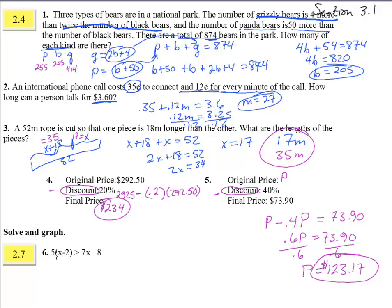Number six, solve and graph. We've got to graph this guy as well. So here we have, we jump this 5 in and we get 5x minus 10 is greater than 7x plus 8. We've got to get the x's together. So let's subtract 5x. And then subtract 8 to both sides and we get negative 18 greater than 2x. And divide both sides by 2. And we get x is less than negative 9.